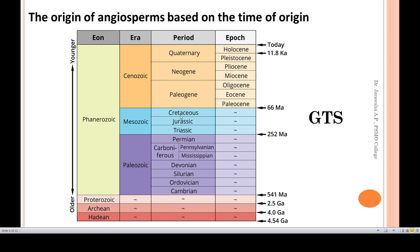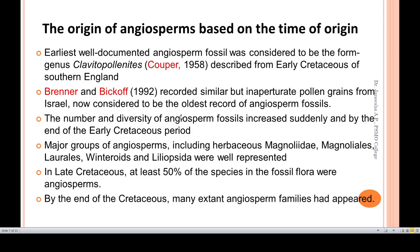In the Cretaceous, you see gymnosperms forest. In the Jurassic, you will see gymnosperms. In the beginning, at the junction of the Jurassic and Cretaceous period, we see the evolution of angiosperms beginning.